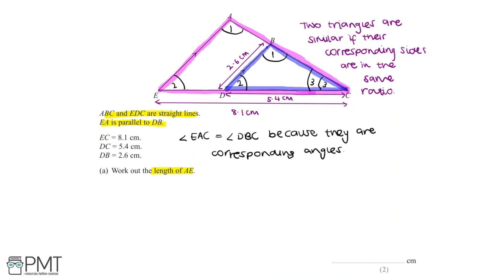Now we can apply the same rule to angle 2. Angle AEC and angle BDC, both angle 2, they're equal because they're also corresponding angles. And finally, looking at angle 3, we know that angle BCD and angle ACE are equal because they're simply the same angle.